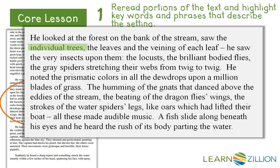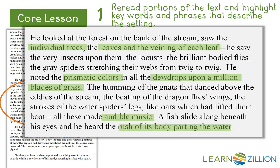Here are the things he sees and that are described in this setting: the individual trees, the leaves and the veining of each leaf, the prismatic colors on the dew drops upon a million blades of grass. He also hears the audible music of those insects, those dragonfly wings, the water spiders, and the rush of a fish's body as it parts the water.